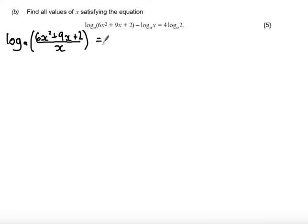On the right hand side I'm going to use the power law which means that the coefficient 4 can go up as a power of 2. So I get log base a of 2 to the power of 4. Now since log of this function here is equal to log of this function here, that leads to the fact that we have 6x squared plus 9x plus 2 over x is equal to 2 to the power of 4.